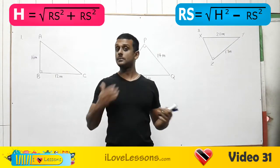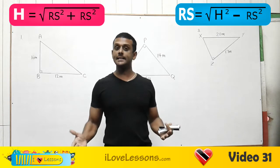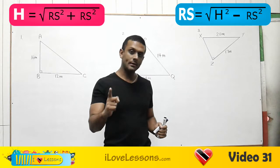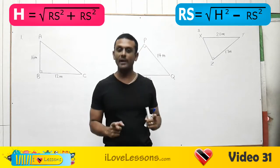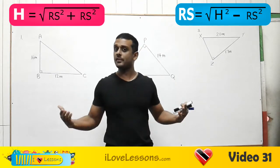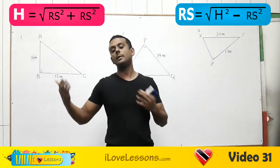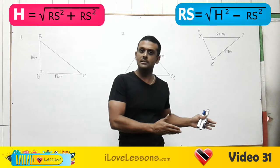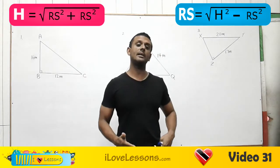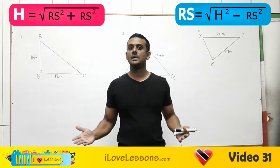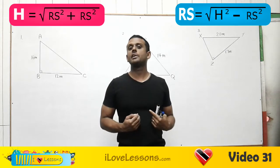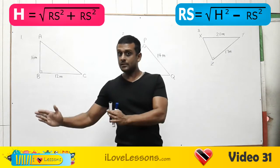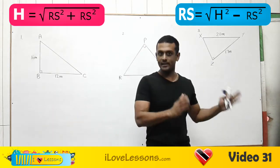Good day and welcome to video 31. Today we will be starting off trigonometry. Trigonometry only deals with one basic shape: the triangle. There are many different types of triangles — right angle triangles, isosceles triangles, scalene triangles, acute angle triangles. When I am teaching trigonometry, I'm going to divide triangles into two groups: right angle triangles and non-right angle triangles.